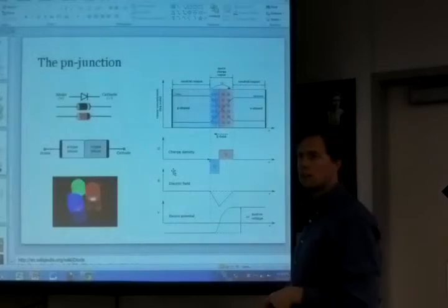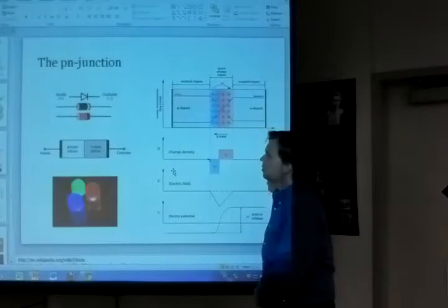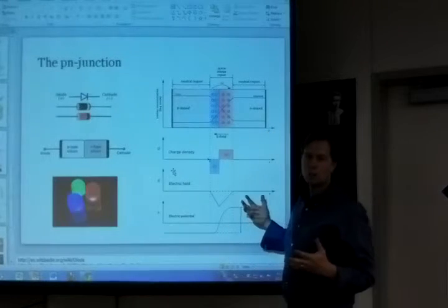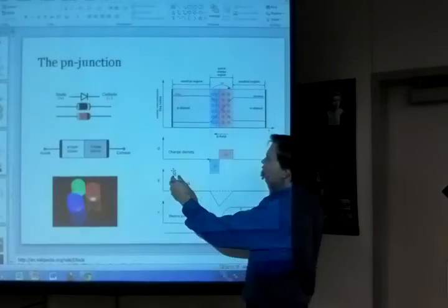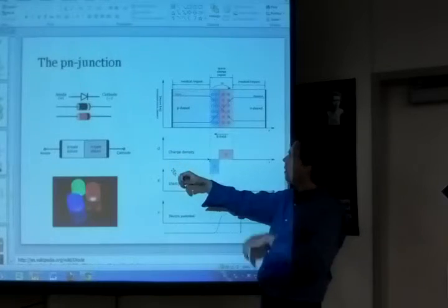That's called forward biasing this diode, which is what you call a PN junction when it's in an electric circuit. Now let's suppose we flip the terminals of the battery.